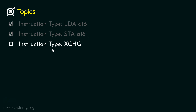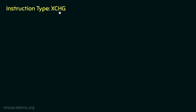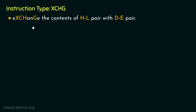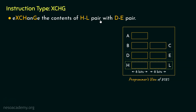Let's now learn about the instruction type XCHG. Now coming to XCHG, you might be wondering — we haven't mentioned any register, neither have we mentioned any address or data within this instruction. So what does it do? Well, it stands for 'exchange the contents of HL pair with DE pair.' Remember, it will only work between these two register pairs. It is not going to work with BC and DE, nor with BC and HL — only DE and HL.